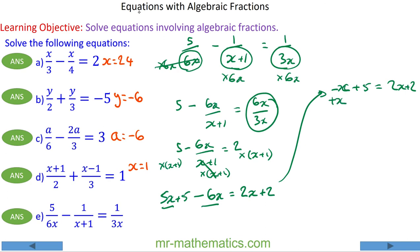So now I have 5x take away 6x which is minus x plus 5 is equal to 2x plus 2. I'm going to add x to both sides, so these will cancel. 5 will equal 3x plus 2. Take away 2 from both sides, so 5 take away 2 is 3 will equal 3x. Divide both sides by 3 and x will equal 1.